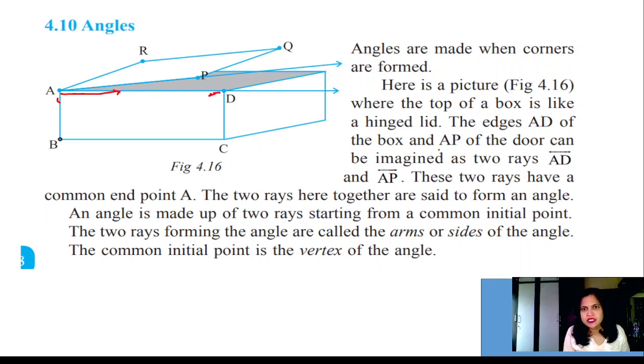The edge AD of the box and AP of the door can be imagined as two rays, AD and AP. These two rays have a common point, which is A. The two rays together are said to form an angle.